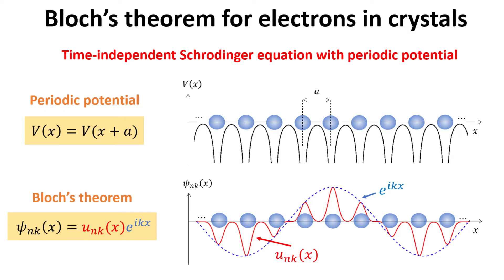Among many other things, Bloch's theorem unravels the subtleties of electronic behavior in solids, such as why electrons can travel large distances in a crystal lattice — much longer than interatomic spacing — without scattering. It unavoidably leads to the important concept of band structure, and to the explanation of why some materials are good conductors while others are insulators or semiconductors.